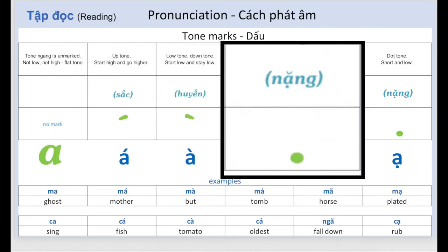The last and final tone is so heavy, the mark falls under the letter instead of being above the letter like the other marks. The dot tone, nặng. Short and low. A. A. Examples: Mạ, Kạ.